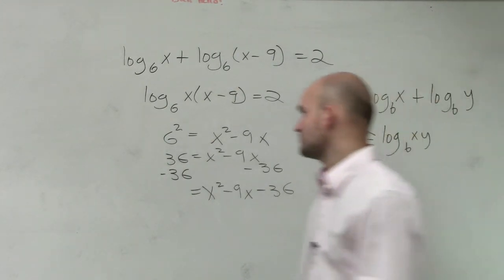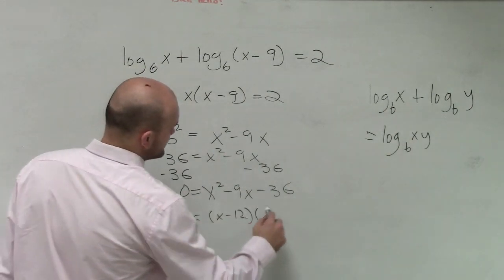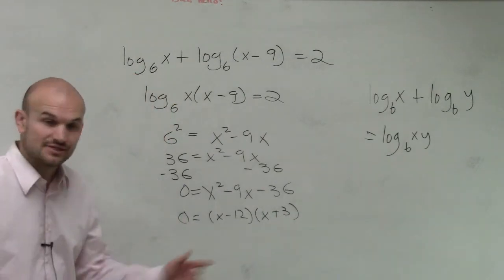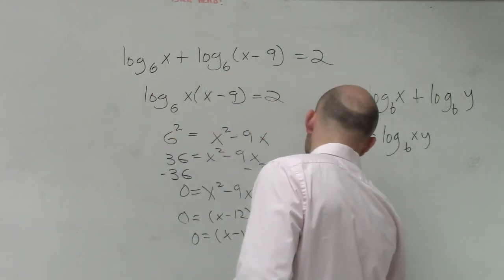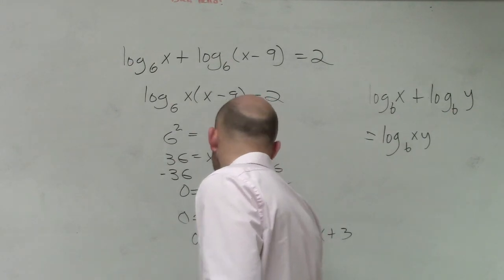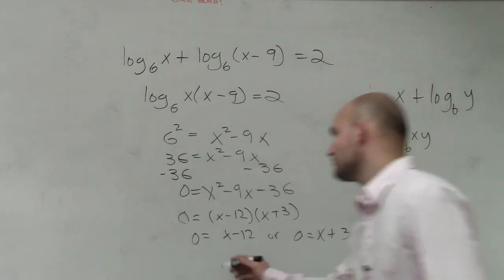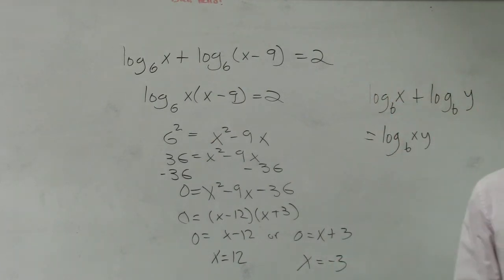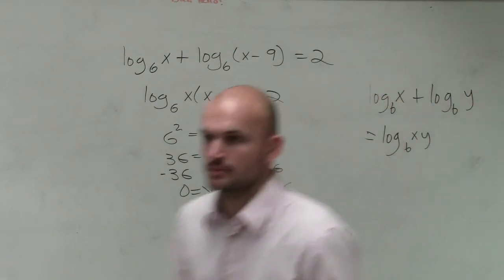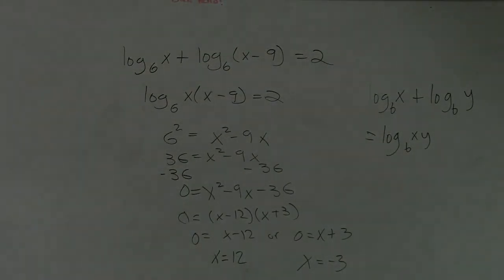12 and 3. So we can say this set equals 0: x minus 12 times x plus 3 equals 0. Now we apply the zero product property: x minus 12 equals 0 or x plus 3 equals 0. So my two solutions are x equals 12 or x equals negative 3. Questions? Everybody got it?